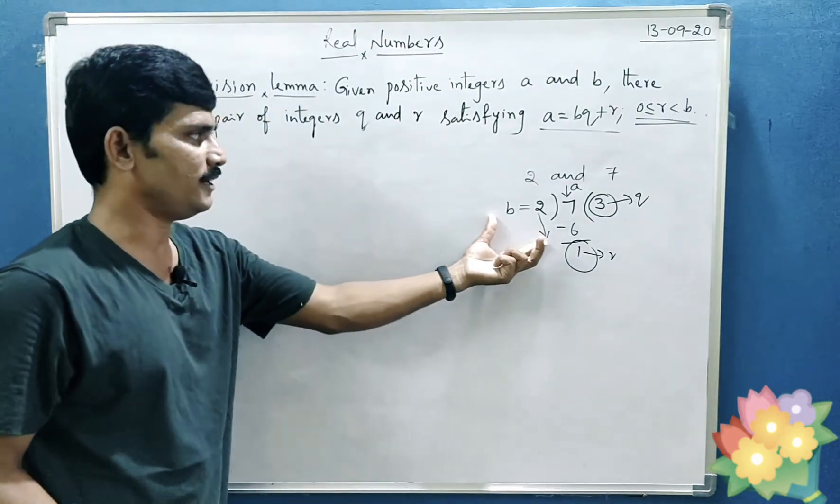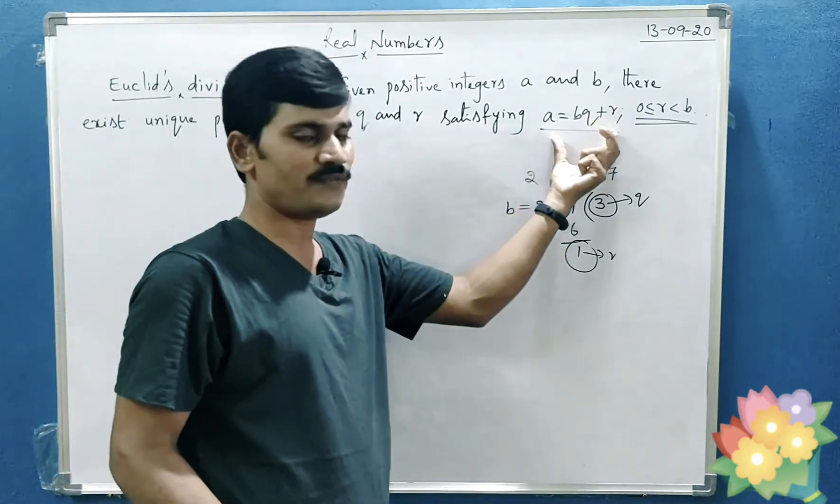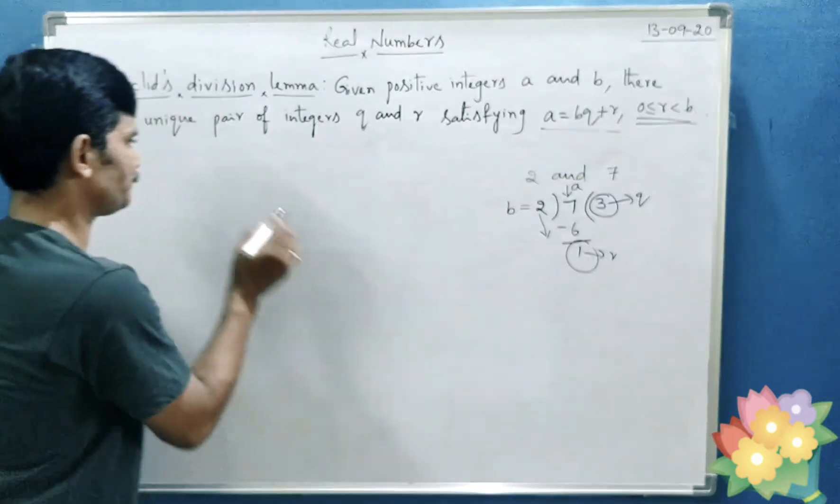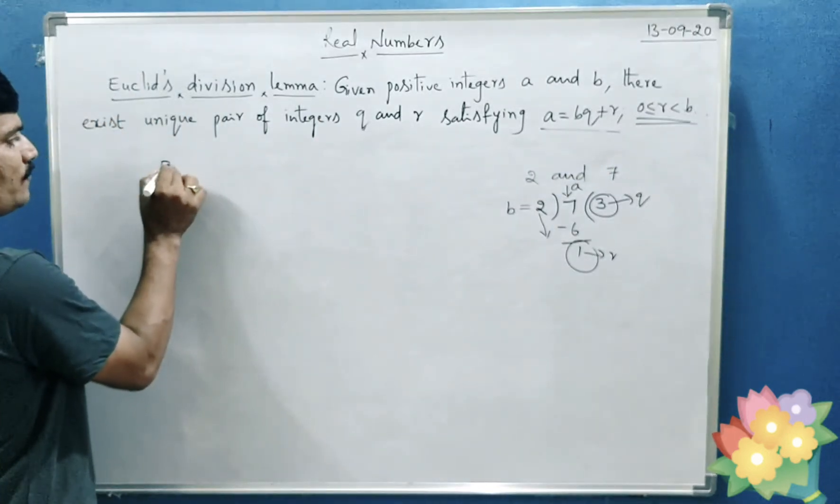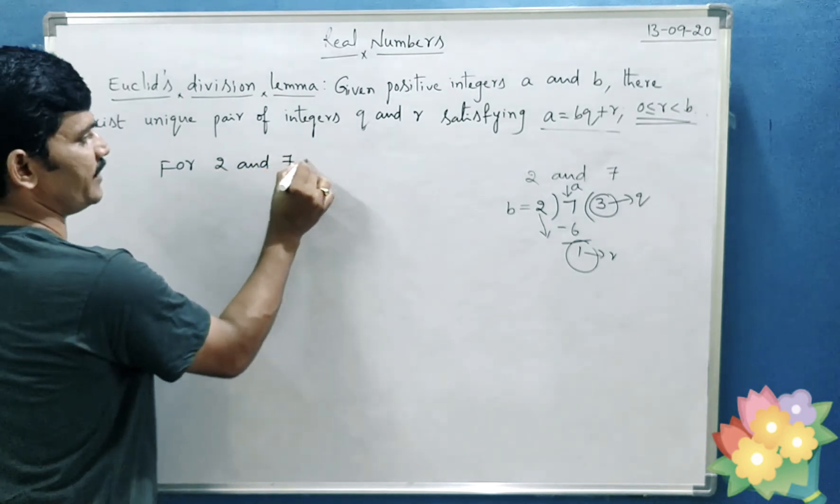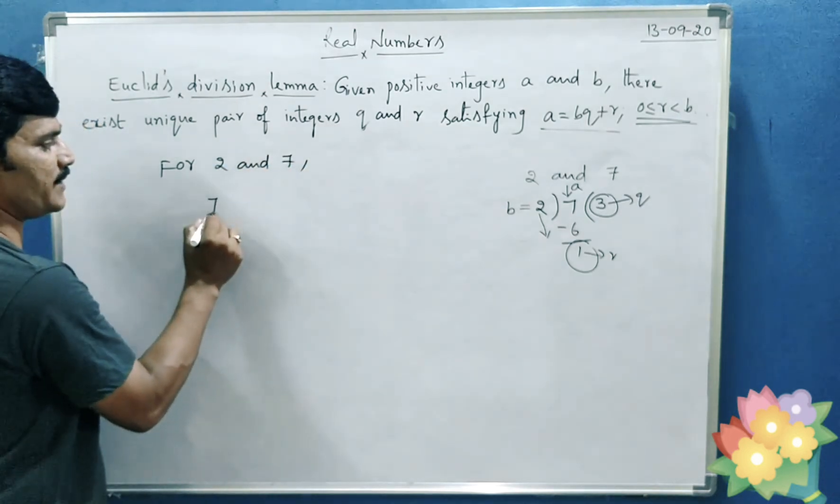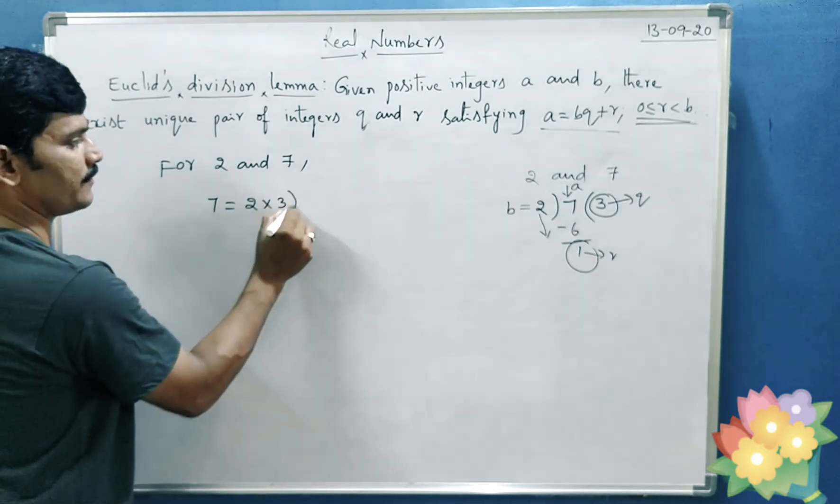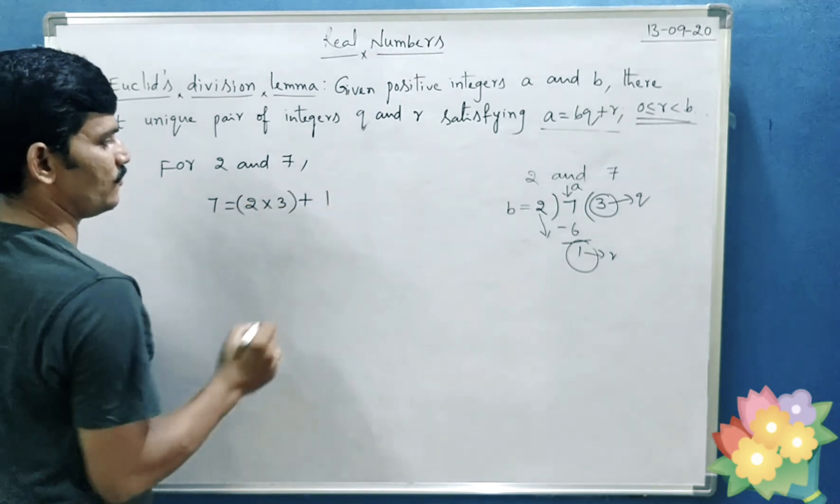So let us write this division in the form of Euclid's division lemma. That is for 2 and 7, 7 can be written as 2 times 3 plus 1.